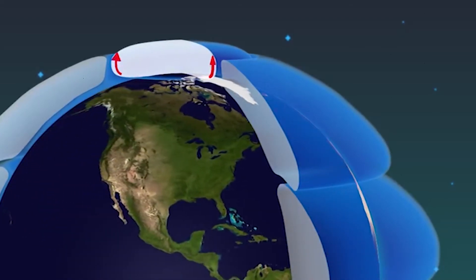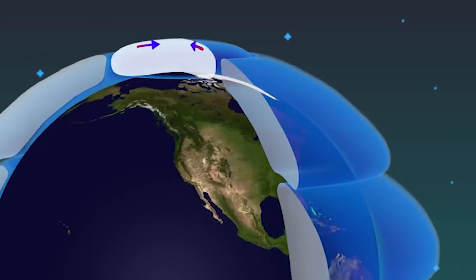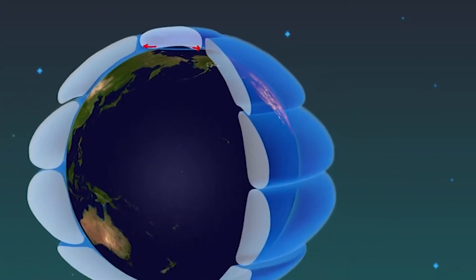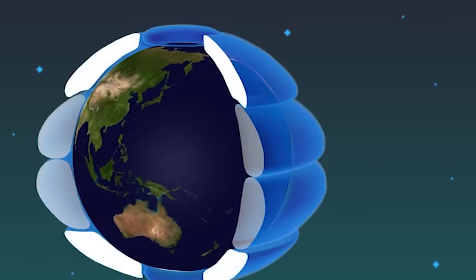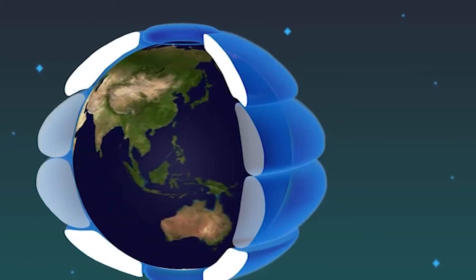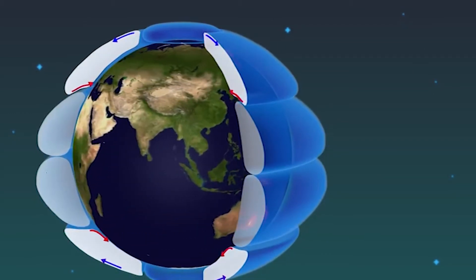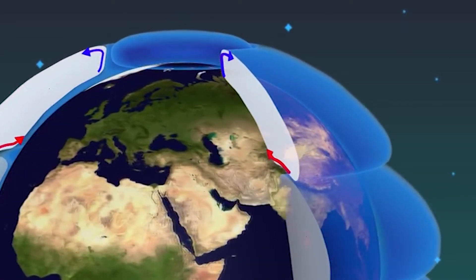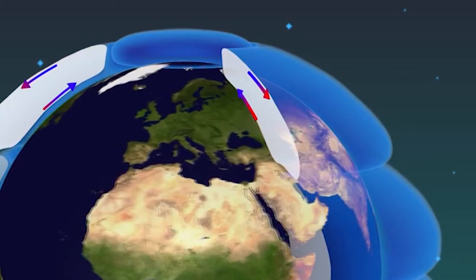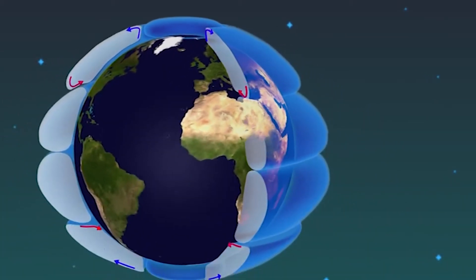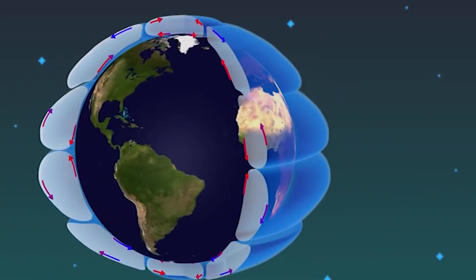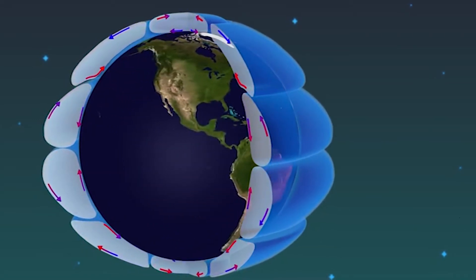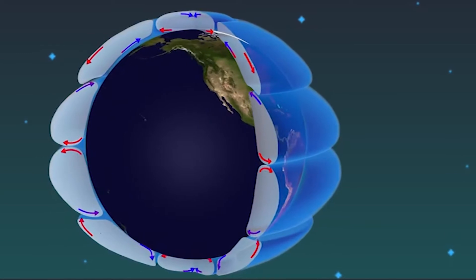Global pressure bands are related to the vertical circulation of the air, with highs at 30 degrees and the poles, and lows at the equator and around 47 degrees latitude. These surface pressure bands not only determine the climate at their location but also drive the horizontal surface winds. This concept will help you not only in this class but in understanding the weather wherever you travel in the world.